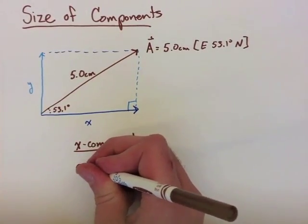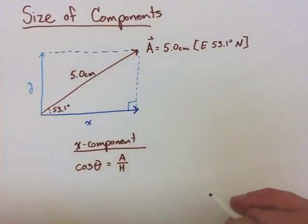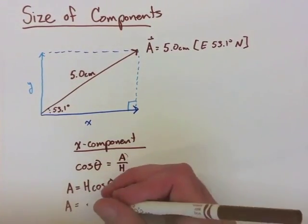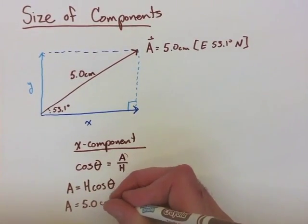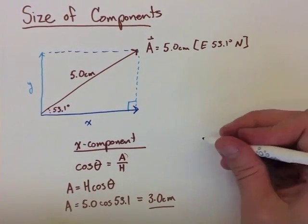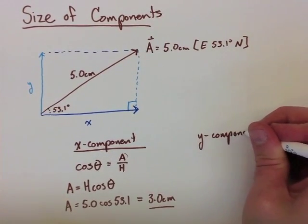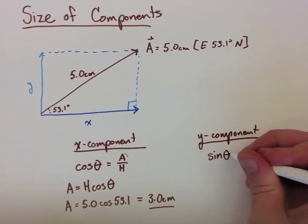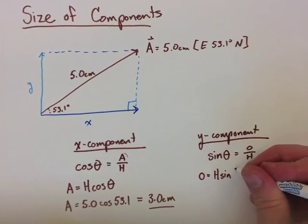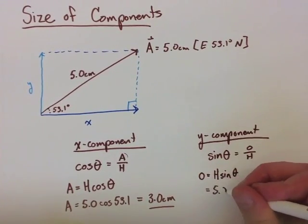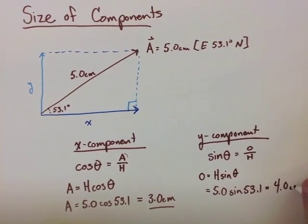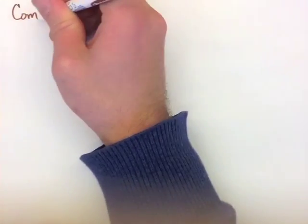To find the x component, we'll use cos theta equals adjacent over hypotenuse, where the adjacent is equal to our x value. When we rearrange, we get our 5.0 times cos 53.1, and we find that our a value is 3. For our y component, we're going to use sin, because our y is equal to our opposite, and that's opposite over hypotenuse. When we rearrange this formula, we end up finding that 5 times sin 53.1 equals 4 centimeters. So our x and y components are equal to 3 and 4.